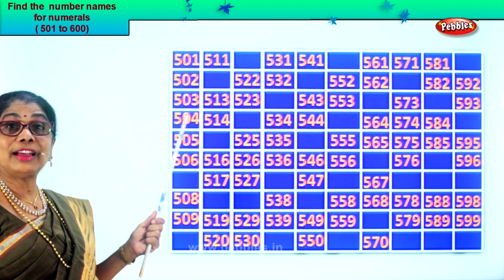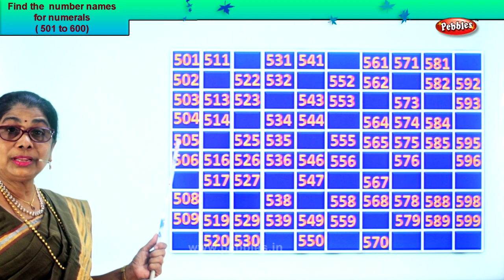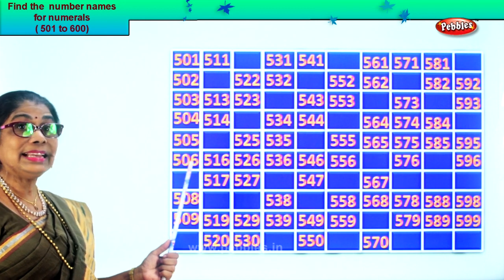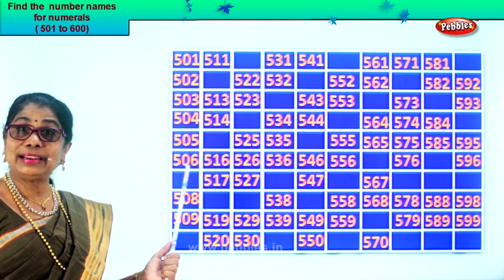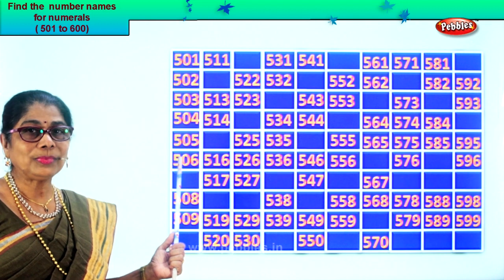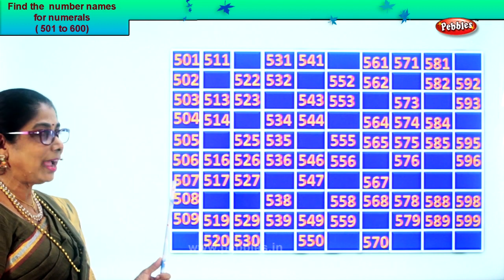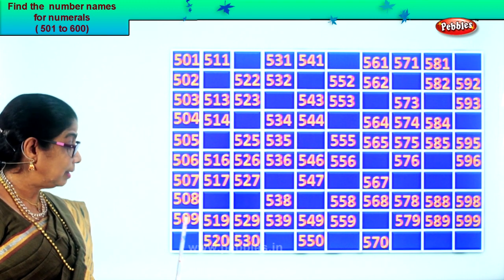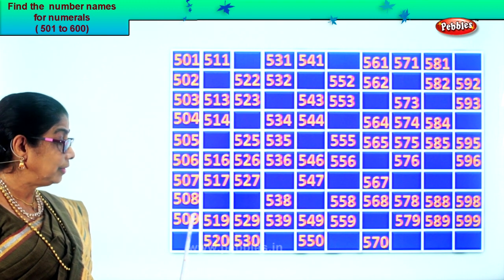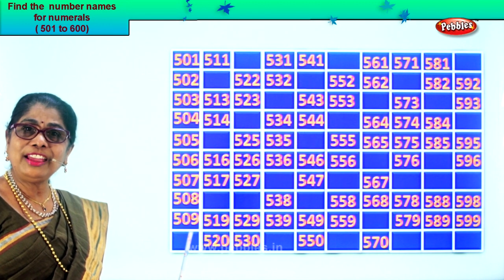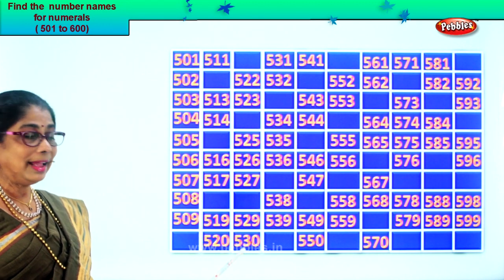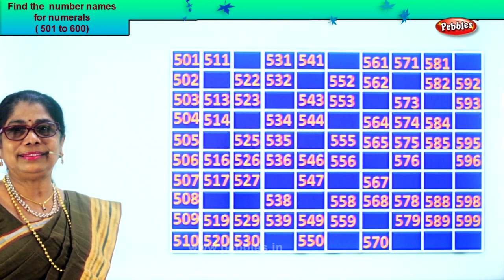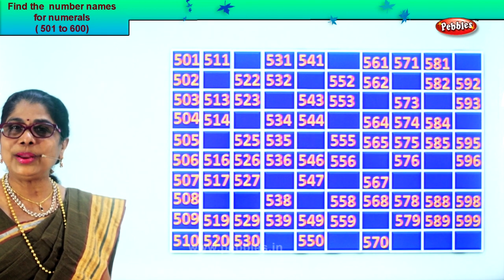After four comes five, so five hundred and five. After five is six — five hundred and six. After six comes seven, so five hundred and seven. After seven comes eight — five hundred and eight. After eight comes nine — five hundred and nine. After nine is ten — five hundred and ten. Now here ends the first set.